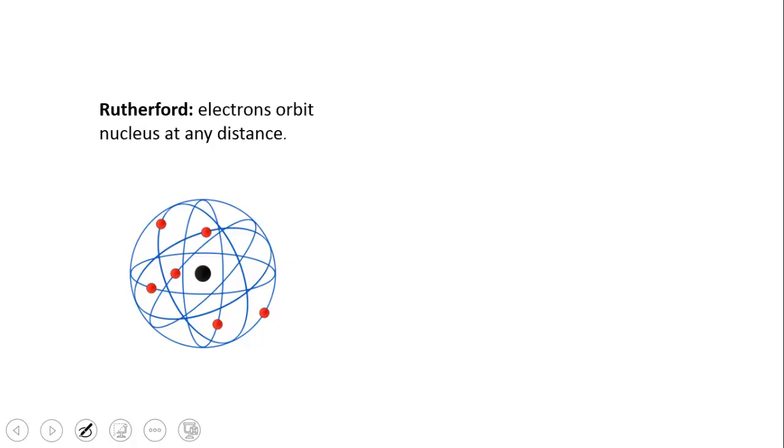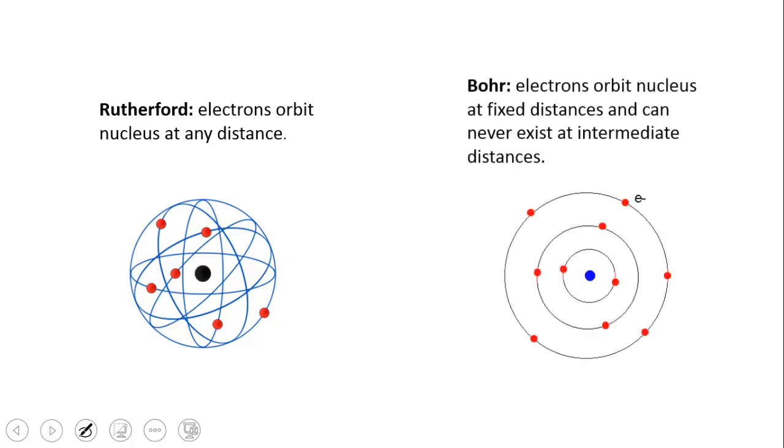However, in 1913, Niels Bohr came up with a new and improved picture in which he proposed that the electrons must exist in orbits that are fixed distances from the nucleus, and they can never exist in between these fixed orbits. They can only jump from one orbit to another.